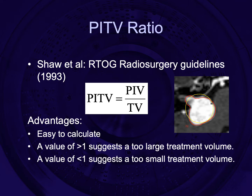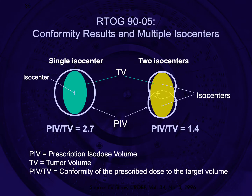The PITV ratio is simply the prescription isodose volume — the yellow line seen on this treatment plan — divided by the target volume, which is the red line delineating the target. The advantages are that it's easy to calculate. A value greater than one suggests a too-large treatment volume, while a value less than one suggests a too-small treatment volume. It was used in the RTOG 9005 results: covering your target with a single isocenter gives a PITV ratio of 2.7, while a two-isocenter plan gives a much better ratio of 1.4.